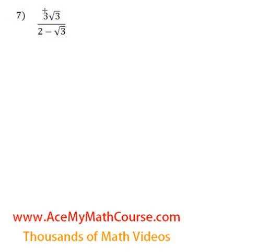Question number seven. Let's rationalize this. So we have 3 root 3 over 2 minus the square root of 3.